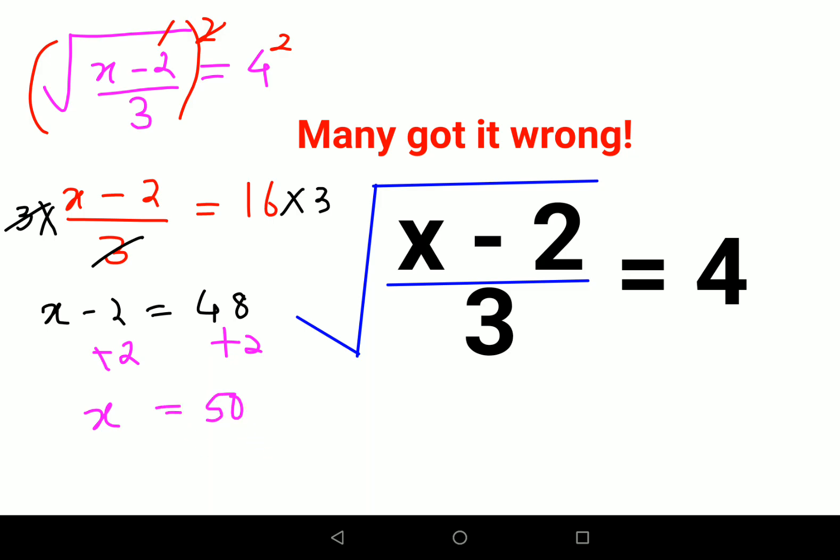Now let's try and put it over here. 50 minus 2, that gets you 48 upon 3 under a root, so this is 16. So now we know root 16, the answer is 4, which is the RHS given.